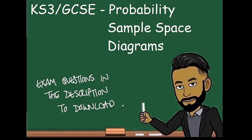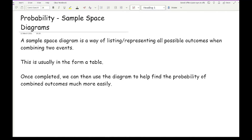Welcome to this video on probability with a focus on sample space diagrams. We'll go through some common exam-style questions — a copy is in the description below for you to download and attempt before watching the answers. A sample space diagram lists all possible outcomes when combining two events, usually in the form of a two-way table. Once completed, we can use it to find the probability of combined outcomes much more easily.